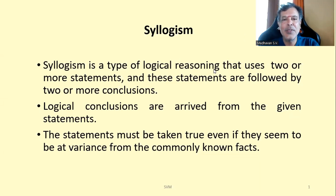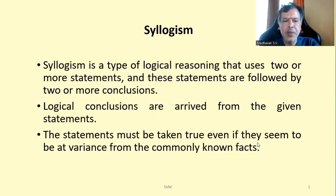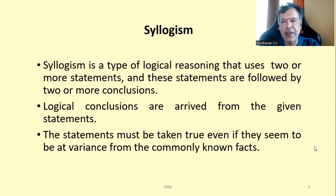In this we will understand about syllogism. It is a type of logical reasoning that uses two or more statements, and these statements are followed by two or more conclusions. Logical conclusions are arrived from the given statements. The statements must be taken as true even though they may look odd or seem to be at variance from commonly known facts.